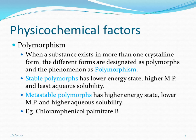More than 60 percent of drugs available in the market are from the metastable category. They have the ability to convert from metastable form into stable polymorphs, so stabilizers are added to prevent this conversion. For example, chloramphenicol palmitate is available in four different forms: A, B, C, and D. Chloramphenicol palmitate B is the active form. Overall, metastable polymorphs show better aqueous solubility than stable polymorphs.